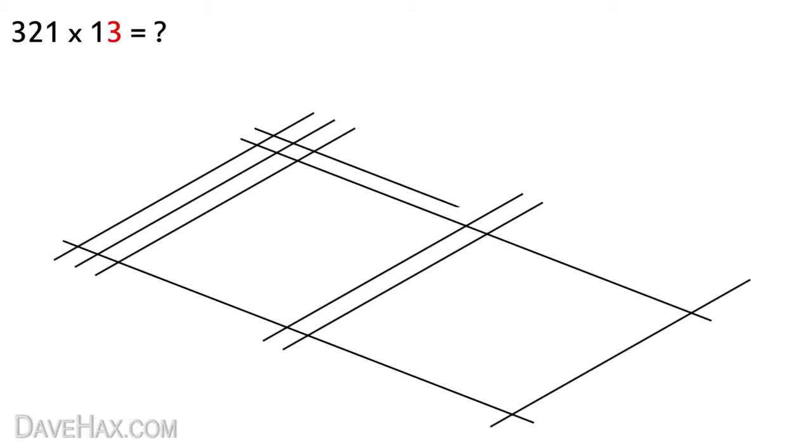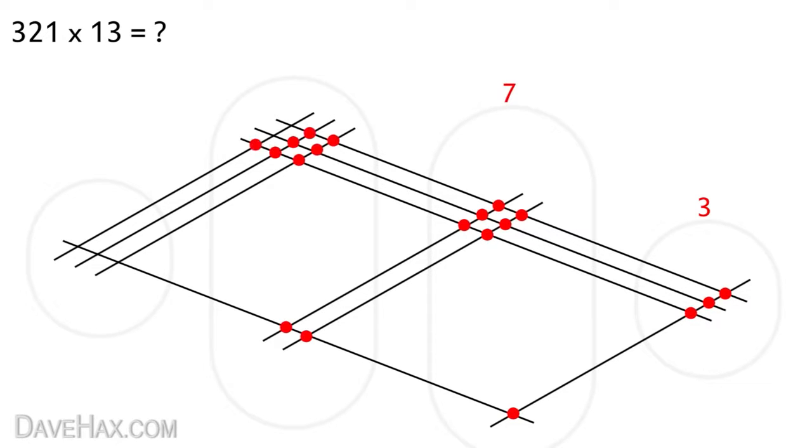Once we've drawn out the pattern we'll mark out the zones. This time as you can see there will actually be four zones. Then starting from the right again we'll count out the dots. Three. One at the bottom 2 3 4 5 6 7. Then 1 2 3 4 5 6 7 8 9 10 11.